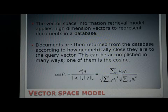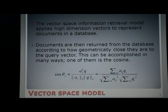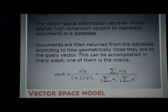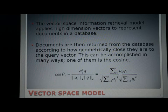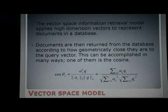In the vector space model, queries are made to the database using a query vector. The terms one wants to retrieve documents on will have higher values in this query vector. Documents are then returned from the database according to how geometrically close they are to the query vector. This can be accomplished in many ways; one of them uses the cosine — the cosine between the query vector and every document vector is taken during the querying process by the following formula.